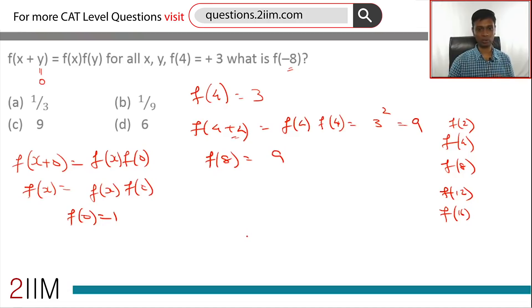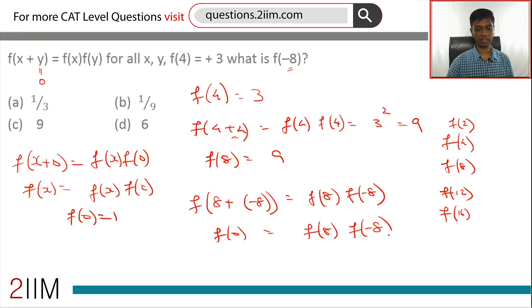Now this is a big breakthrough because now we can write 0 as f of 8 plus minus 8. This is f of 8 into f of minus 8. The moment we write this, this side is f of 0. This is f of 8, this is f of minus 8. This is 1 equals 9 into f of minus 8, or f of minus 8 is 1 by 9, answer choice B.